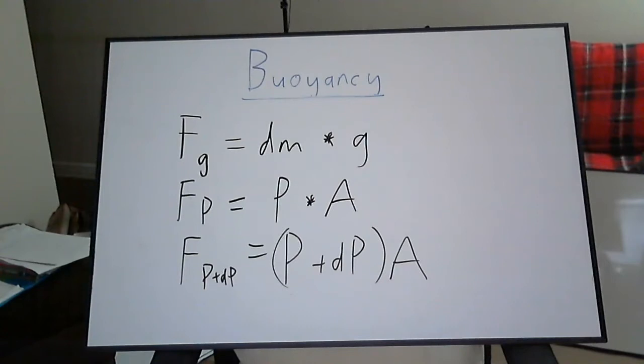The magnitudes of these forces are given as such. Note that the force of gravity is due to the mass of the sample volume while the force due to pressure is due to the surrounding liquid.